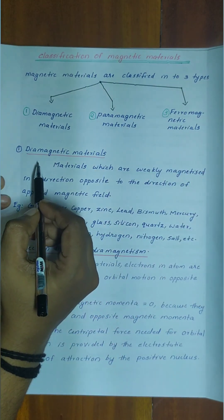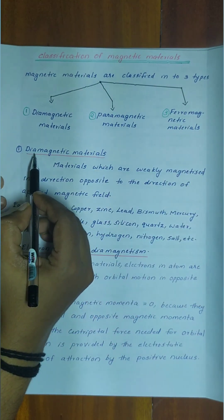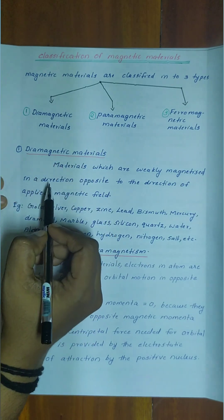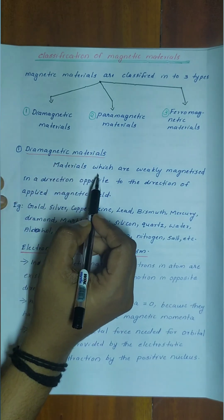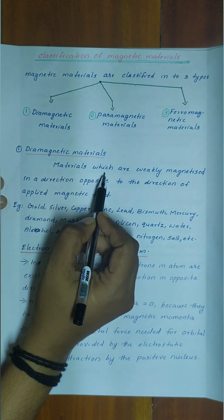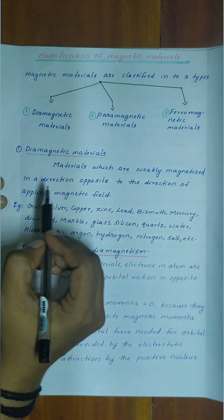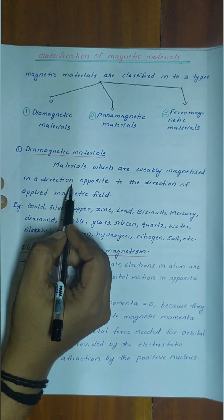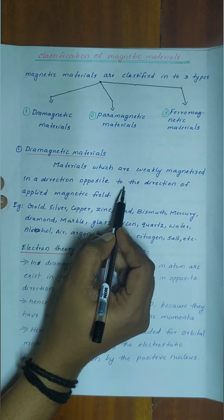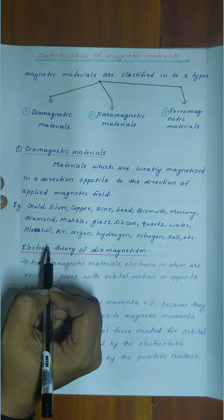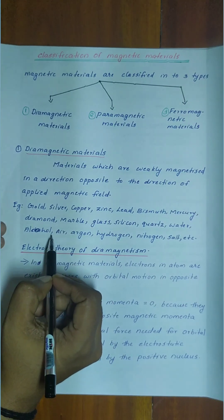First, we can discuss about diamagnetic materials. Diamagnetic materials are the materials which are weakly magnetized in a direction opposite to the direction of applied magnetic field.